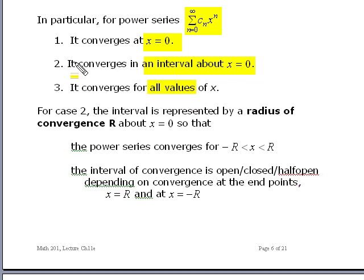If you have case 2, where it converges in an interval about x equals 0, the interval is represented by some radius, by the letter R. And that's called a radius of convergence. This is one dimensional. It's not a circle. But it's still called a radius of convergence. So then 2 becomes, the power series converges for R in the interval minus R to R, because it's converging about x equals 0.